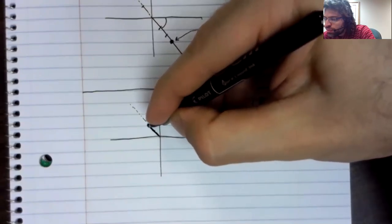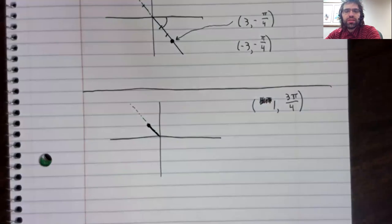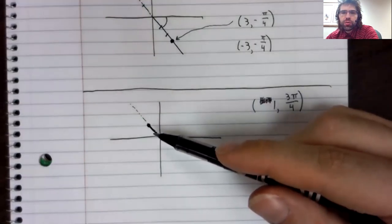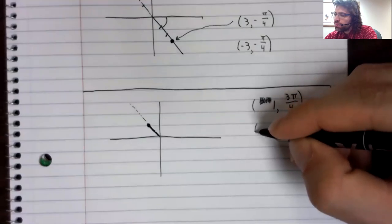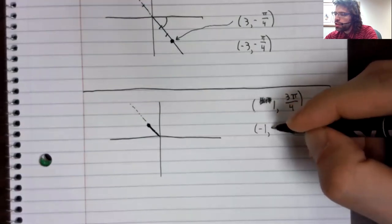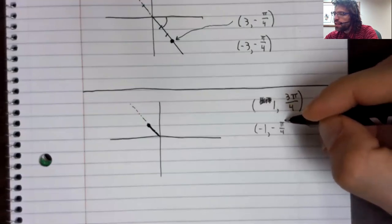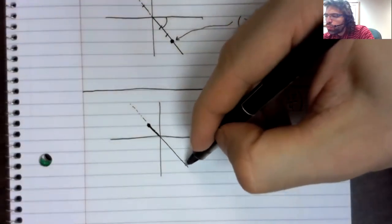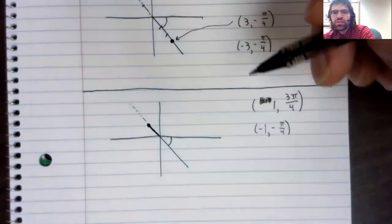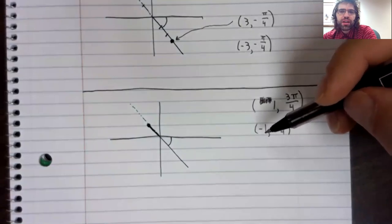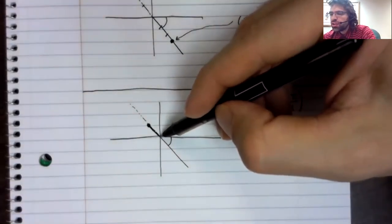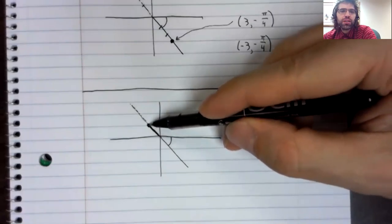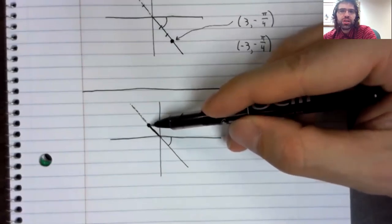And this specifies this point in the second quadrant. This point could also be specified as negative 1, negative pi over 4. Negative pi over 4 would bring us here. And because we have a negative radius, we'd extend the line segment into the second quadrant and count one unit along it and get to this point.